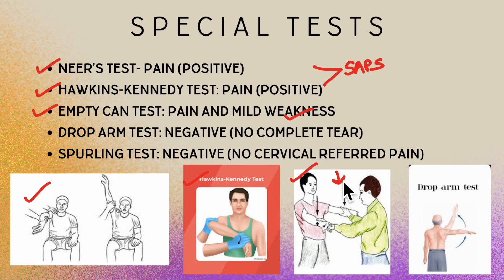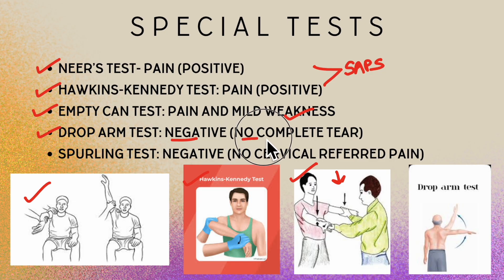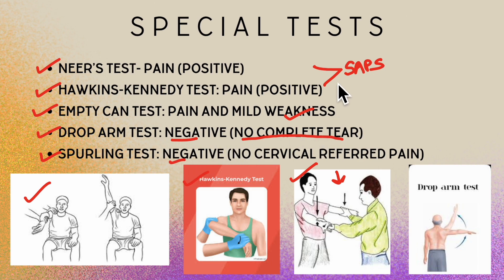The drop arm test, which assesses for a full-thickness rotator cuff tear, was negative — indicating no complete tear. The Spurling test was performed to confirm the pain is not originating from the cervical spine, and that was also negative. From the special tests, we can conclude that subacromial pain syndrome is present.